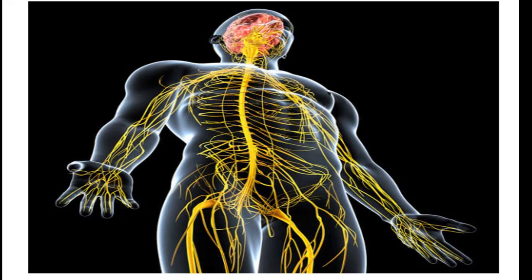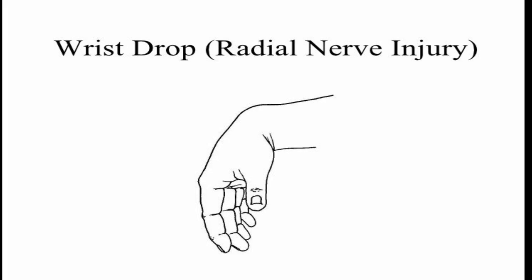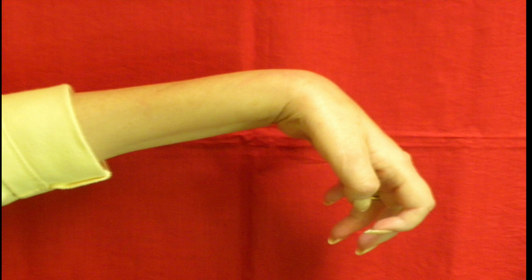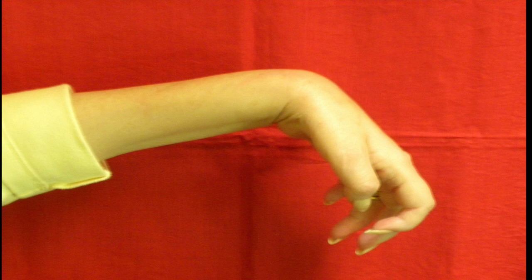The second condition is wrist drop. A wrist drop is a medical condition in which your wrist cannot extend at the metacarpophalangeal joint — your hand is just falling. This is because there's a partial flexed opposing action of the flexor muscles of the forearm, so the extension muscles in the posterior compartment are basically paralyzed. A damage to the radial nerve causes wrist drop.